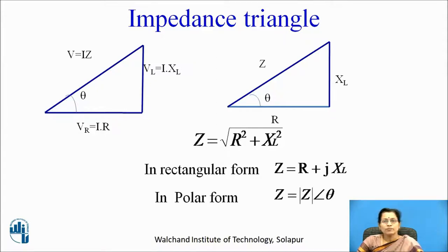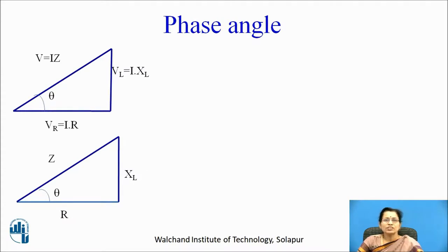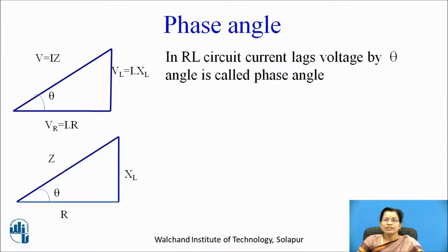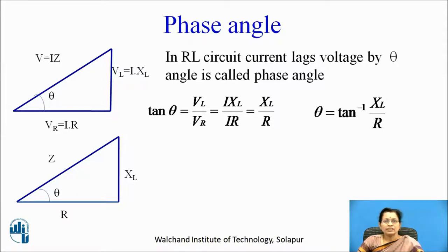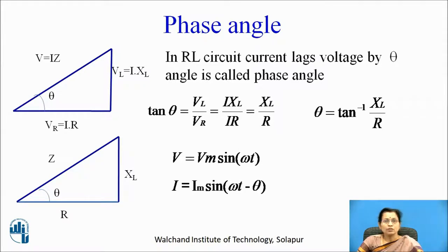In polar form, Z equals magnitude of Z at angle theta. The phase angle: in an RL circuit, current lags voltage by angle theta, which is called the phase angle. We calculate tan theta from the voltage triangle and impedance triangle as Vl by Vr, or Xl by R, so theta equals tan inverse of Xl by R. The voltage equation is V equals Vm sin omega t, and the current equation is I equals Im sin (omega t minus theta), because the current is lagging the voltage by theta degrees.